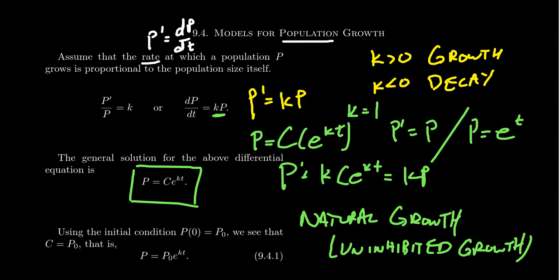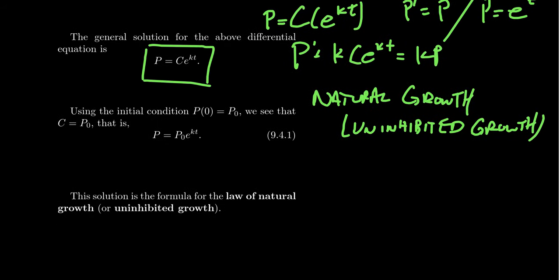Now some other things I should mention, of course, is that the C value right here that we see in the formula. Where does it come from? Well, if we were to take this and plug in T equals 0, so the initial value, P equals 0,